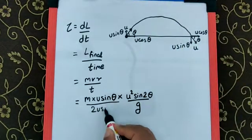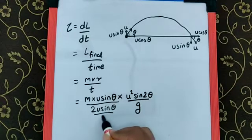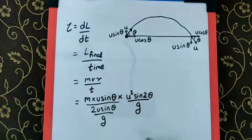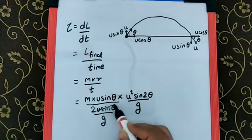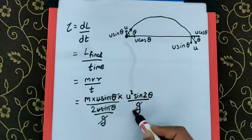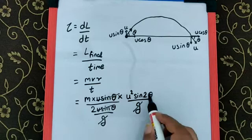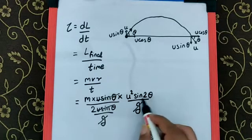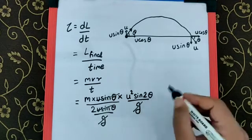Now for the cancellation concern, this u sine theta gets cancelled, this g gets cancelled. Since theta is 45, sine 2 times 45, that is sine 90, is 1.